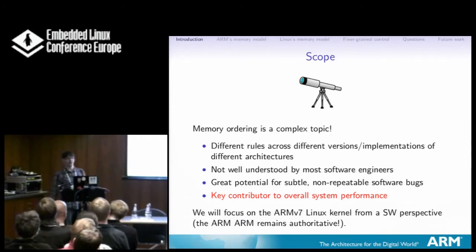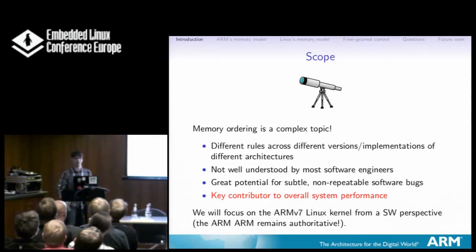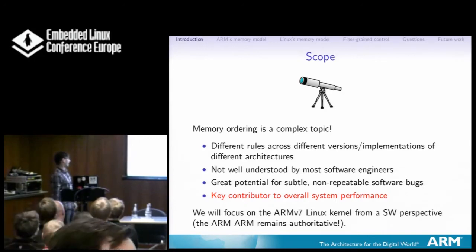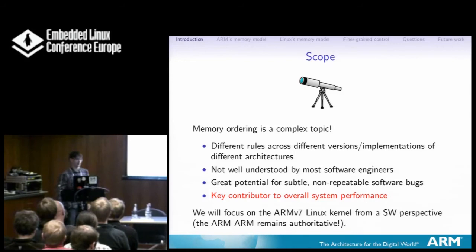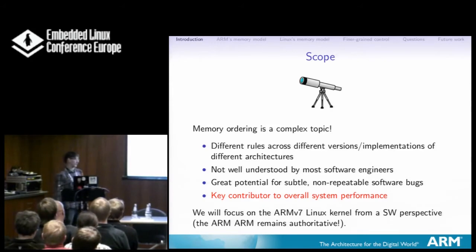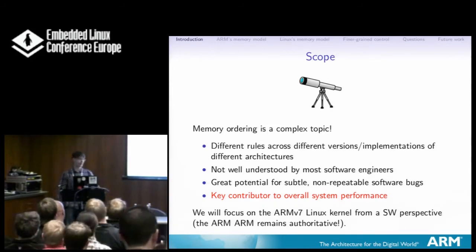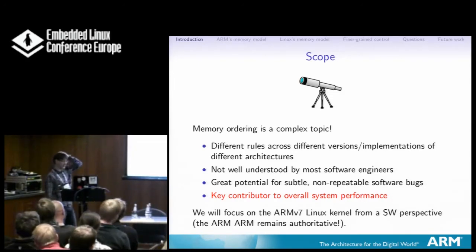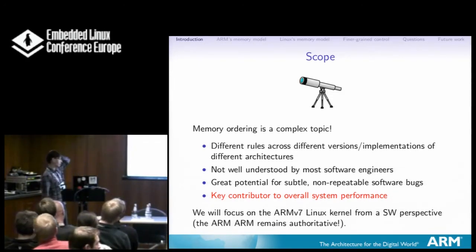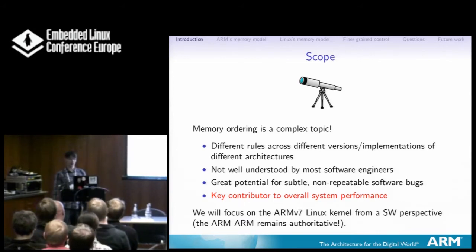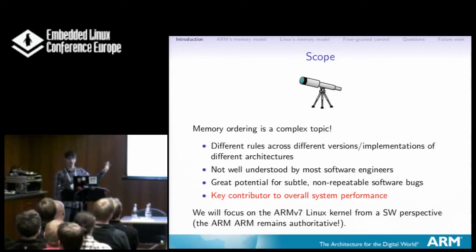It's lovely because it's different for every architecture, and within a given architecture, people implement different levels of it. You can be architecturally compliant by being stricter than what you're allowed to do. Most people don't get it, because it's really hard. And if you get it wrong, you get subtle, non-repeatable software bugs, which are the worst kind. But particularly on ARM, it's a key contributor to overall system performance. I'm going to focus on the ARMv7 Linux kernel — that's 32-bit. There's some new stuff in V8 you can ask about in questions.